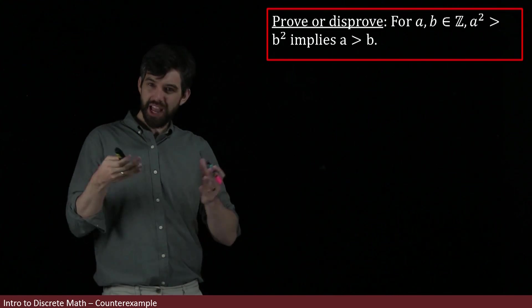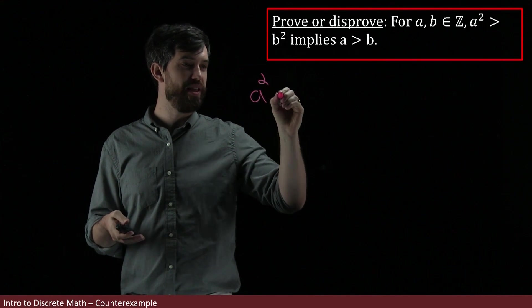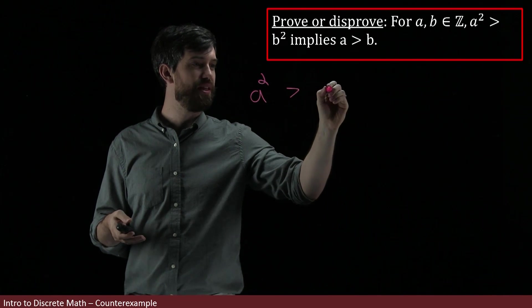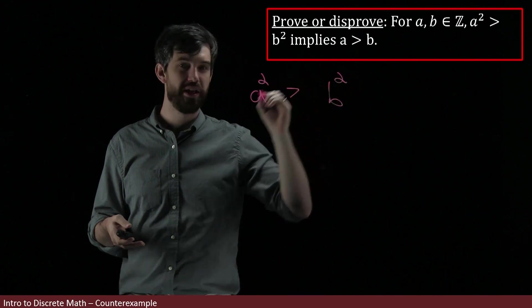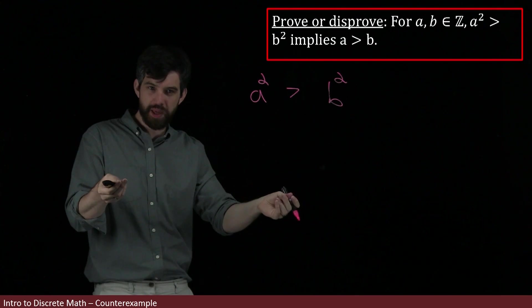So, I think I'm going to begin by just writing down my assumption. In other words, I'm starting with this a squared, and I'm claiming that the a squared is going to be bigger than the b squared. Now, what I want is that a is bigger than b.